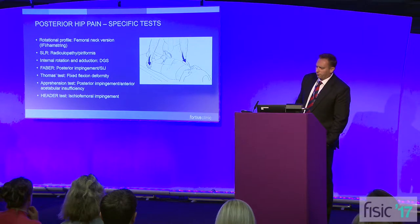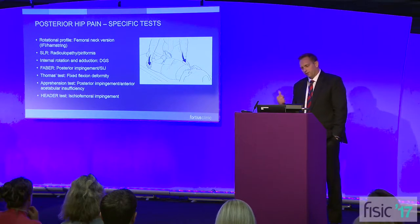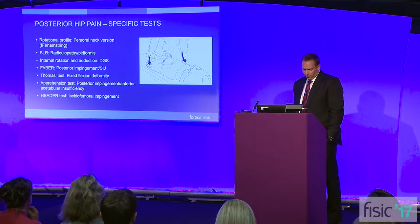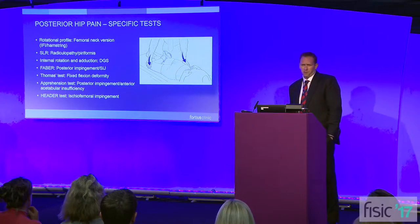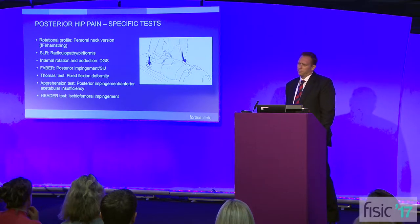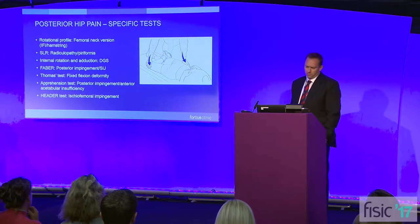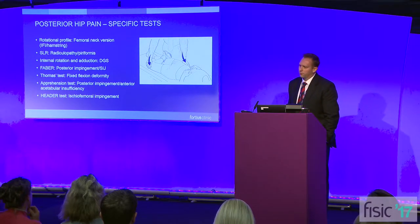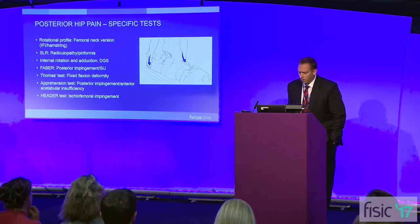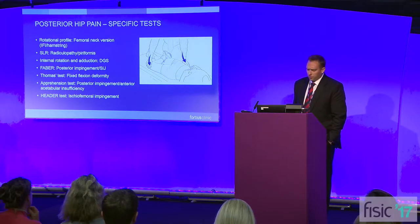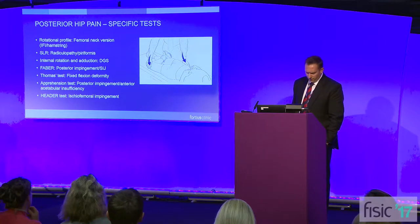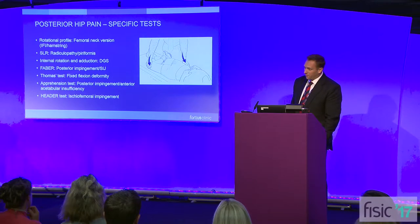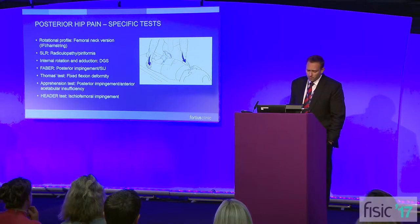With regards to specific tests, there's obviously FABER. I mentioned the rotational profile — the femoral version. We're yet to fully unpick the issue of femoral impingement, but most of us feel there's a big association with increased femoral neck anteversion. You should look at that, especially in flexion, and see how much internal rotation the patient has, because that may be causing IFI or a posterior rim impingement.